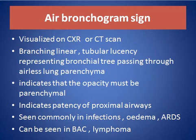An air bronchogram can be seen on chest X-ray and CT scan as branching linear tubular lucencies representing a bronchial tree passing through airless lung parenchyma. These indicate that the opacity must be parenchymal, and they also indicate patency of the proximal airway.